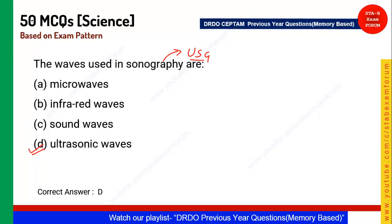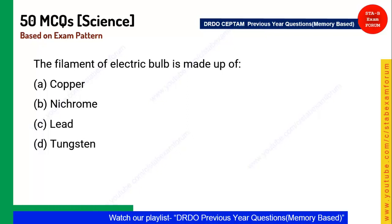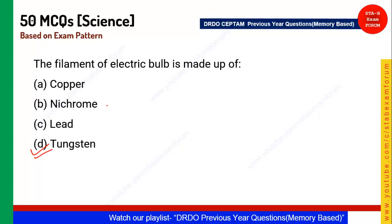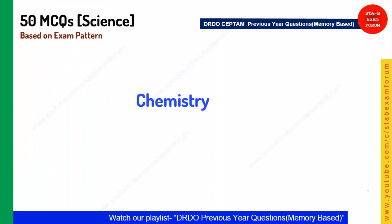Next question: The filament of an electric bulb is made of what? The answer is tungsten — not nichrome. Nichrome is a good conductor of heat, but tungsten is used for the electric bulb filament. That completes 10 physics questions; now let's move to chemistry.